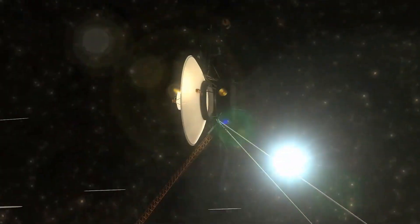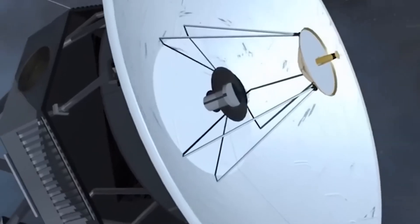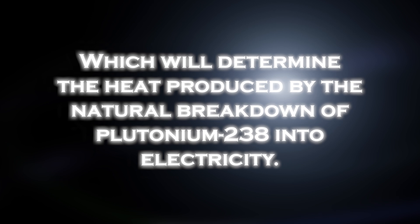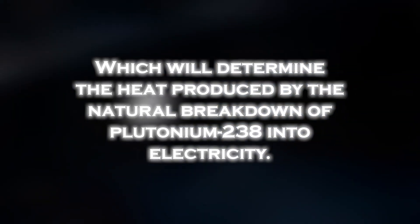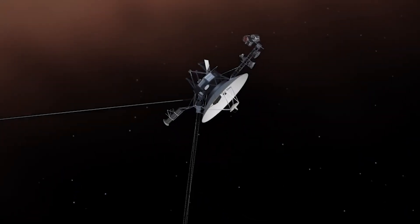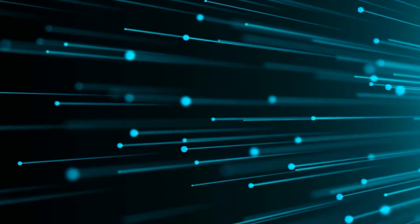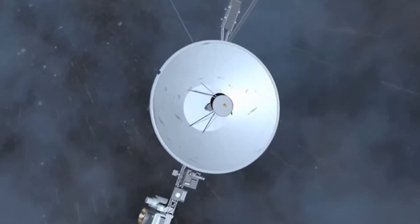As the probe moved farther away from the sun, the amount of sunlight available to power its instruments and systems significantly decreased. The spacecraft's power is generated primarily from three radioisotope thermoelectric generators, which convert the heat produced by the natural breakdown of plutonium-238 into electricity. As the heat output has decreased over time, the available power has decreased, affecting the operation of several onboard systems, including scientific instruments, data transmission, and communications.